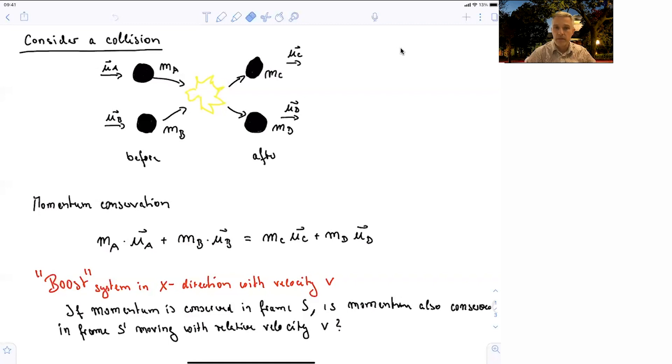But now what happens if we boost the system? If we look at the very same system with a boosted reference frame, we can just simplify the case here by just considering the x direction. So the question is, if momentum is conserved in a frame S, like the one we are looking at here in this picture, is the momentum also conserved in a moving reference frame with relative velocity v?